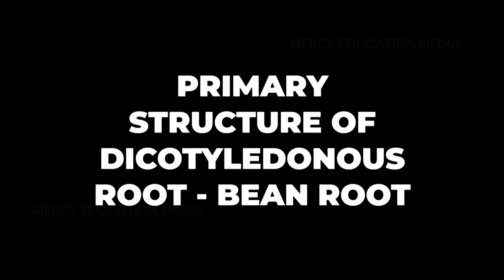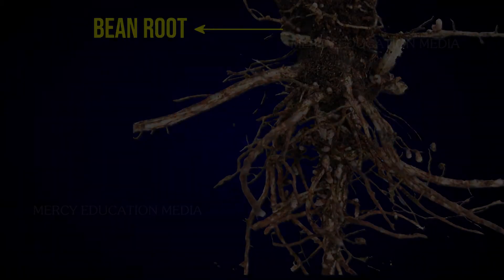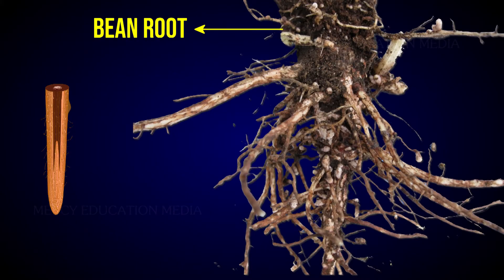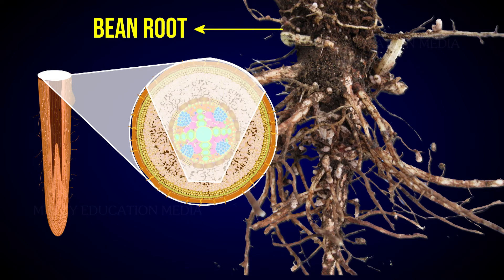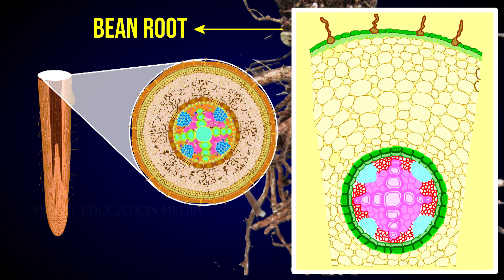Let us see the primary structure of the dicotyledonous root, i.e., bean root. The transverse section of the dicot root shows the following plan of arrangement of tissues from the periphery to the center.